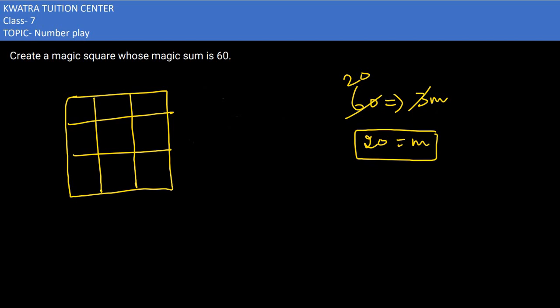Now what I have to create is a magic sum of 60. So my m is already 20. Now I have to find out the numbers. I can take numbers which are very nearby, like I can choose 16 to be there, which pair will become our 24.